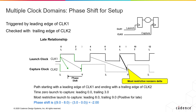Go ahead and verify all other launch to capture scenarios to confirm this conclusion. Let's pretend that this same scenario is happening in the first clock cycle. To do this, move the capture clock waveform so that the most restrictive scenario happens in the first clock cycle. In this case, we can move the CLK2 waveform to the left by 2 units and we can see the most restrictive scenario is in the first clock cycle. These 2 units are considered the phase shift because we are moving the waveform by 2 units. If you arrive at the phase shift via calculation, it is also the same value of minus 2. Therefore, this minus 2 ns is the value for phase shift for setup.